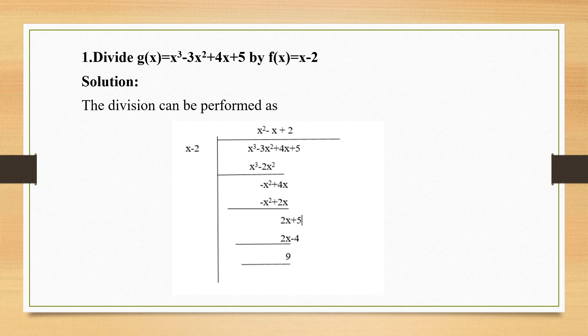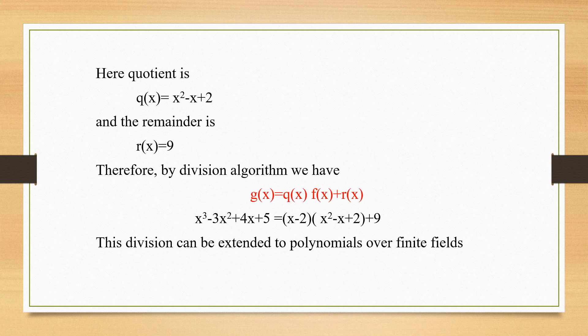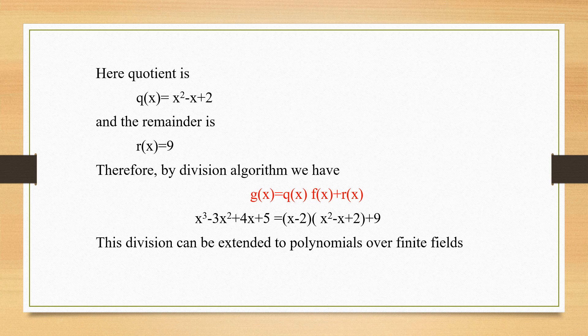Here the quotient is q(x) equals x squared minus x plus 2, and the remainder term is r(x) which is 9.